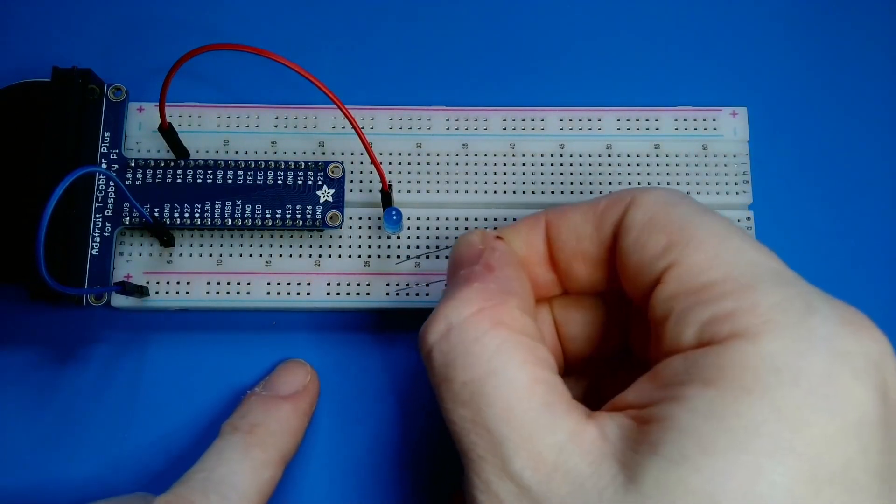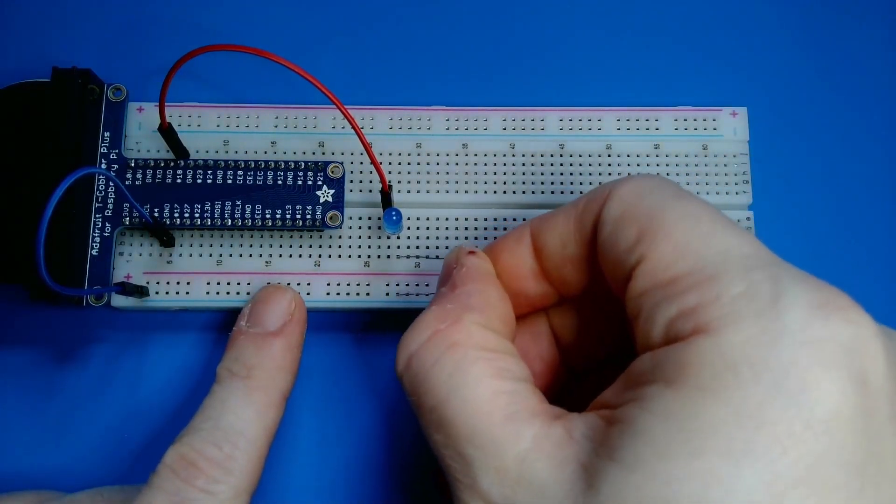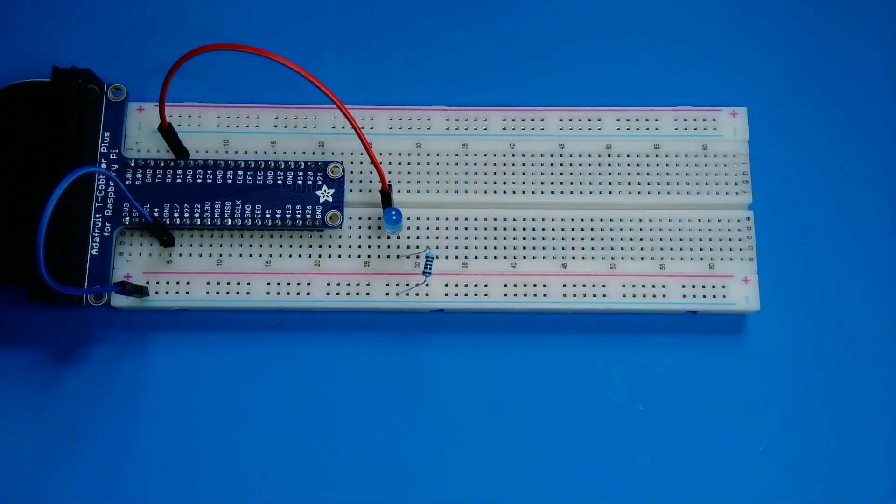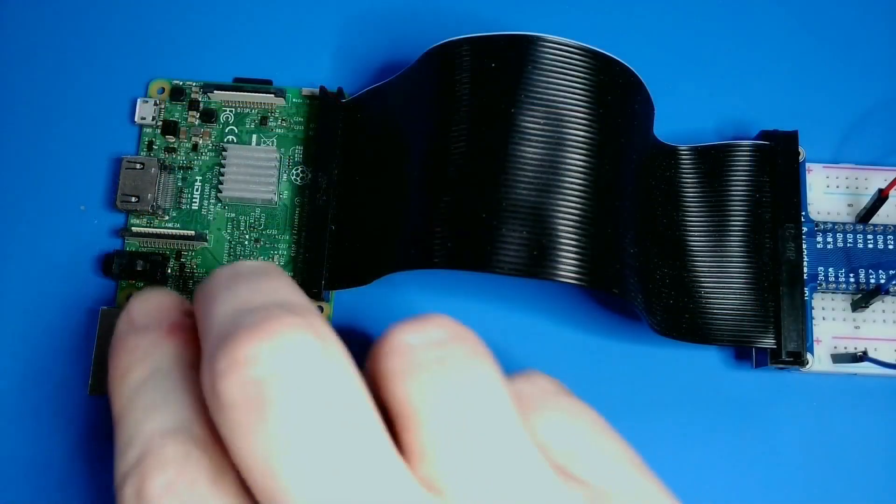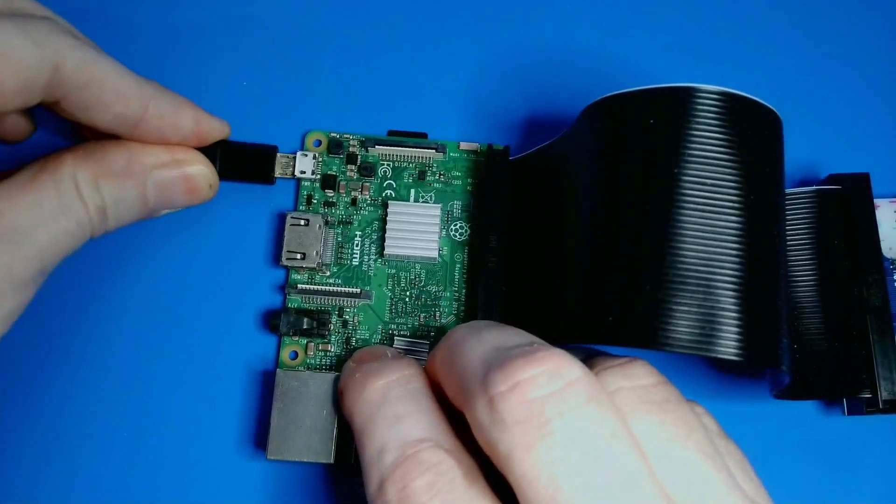Finally, I'll connect that row with the anode to the ground rail using a resistor. This completes the circuit. I'll plug in my device so it can power up while I work on my code.